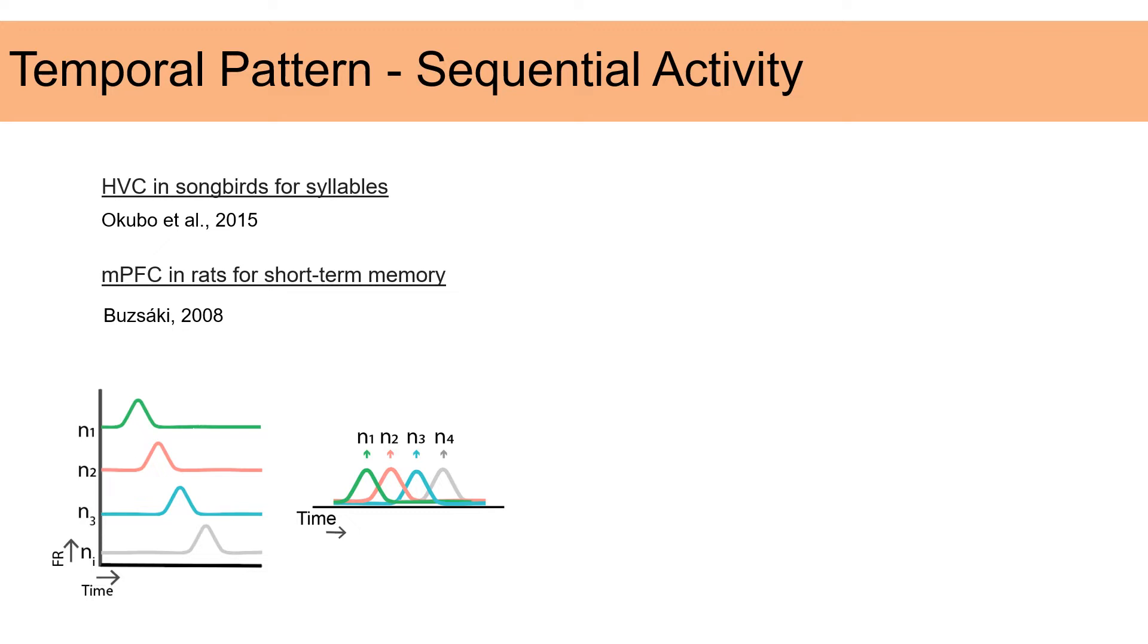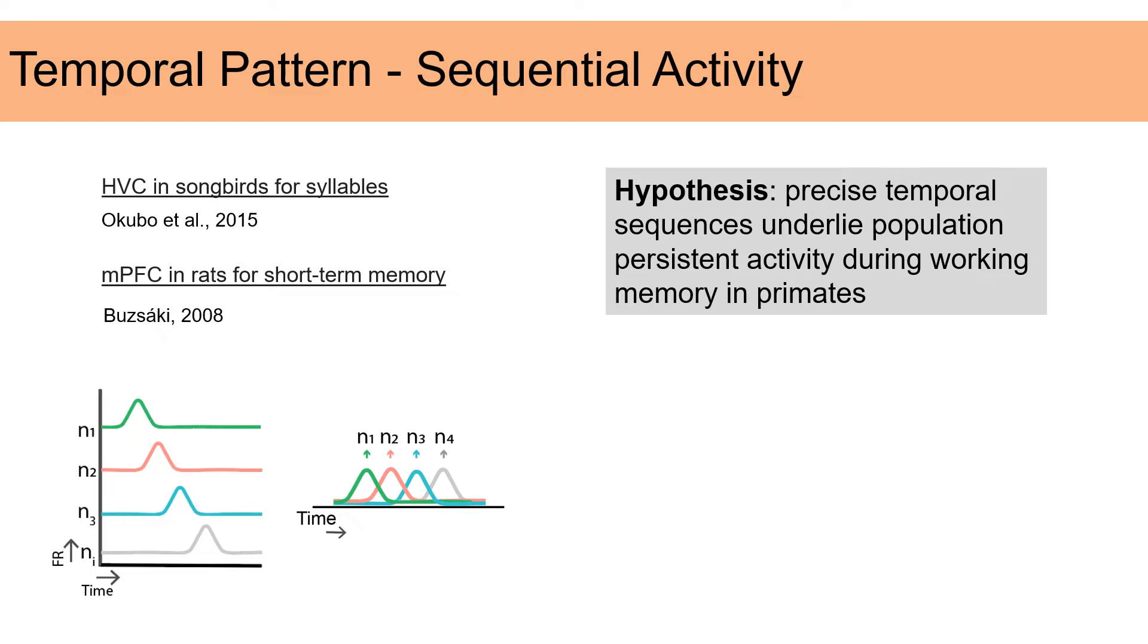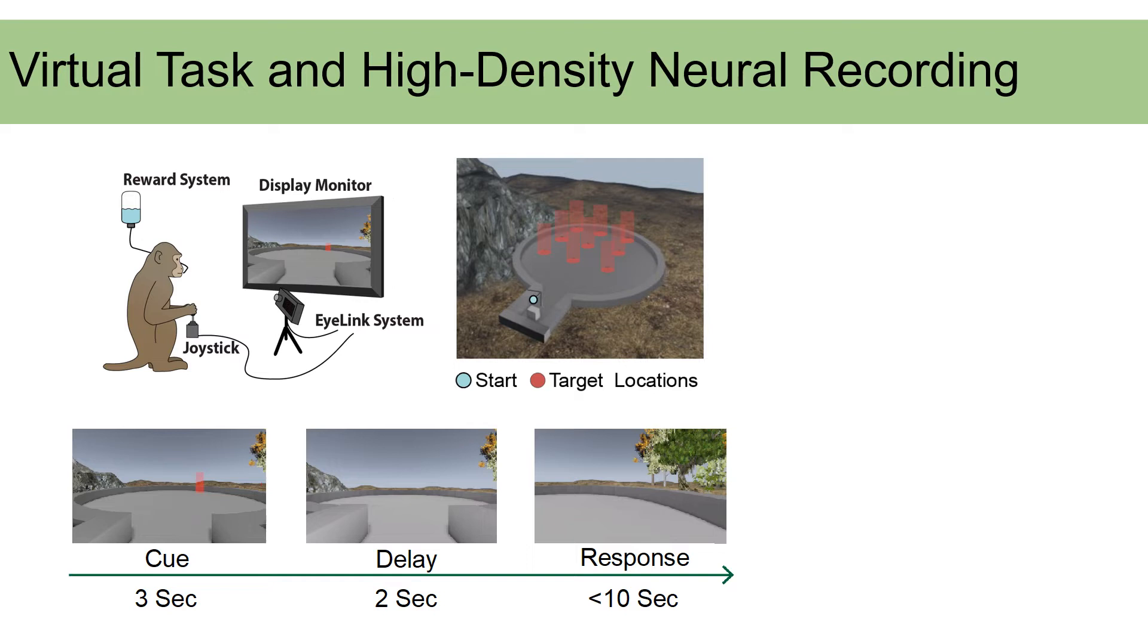Sequential activity, for example, has been identified in various species and brain regions, in which a population of neurons fire precisely in temporal order. Since these sequences rely on transiently active neurons, like the ones identified in the monkey prefrontal cortex during working memory, we hypothesized that precise temporal sequences underlie population persistent activity during working memory in primates.